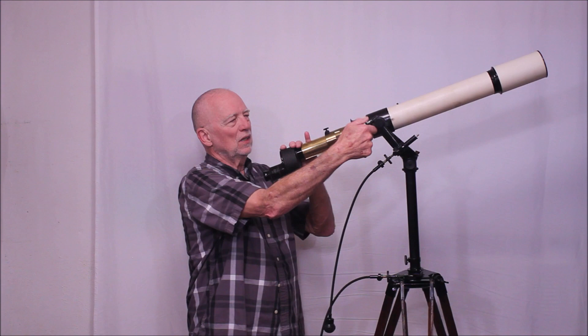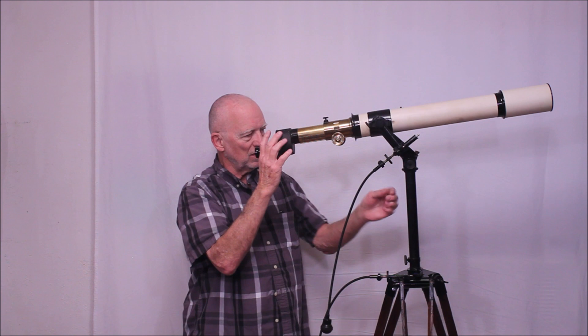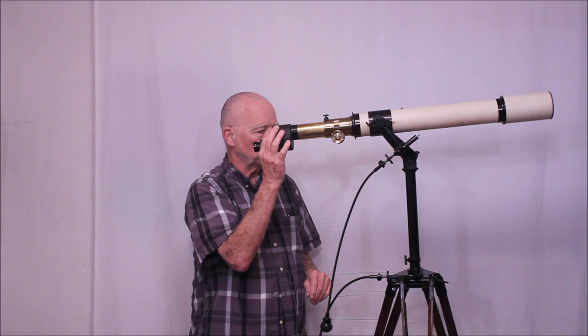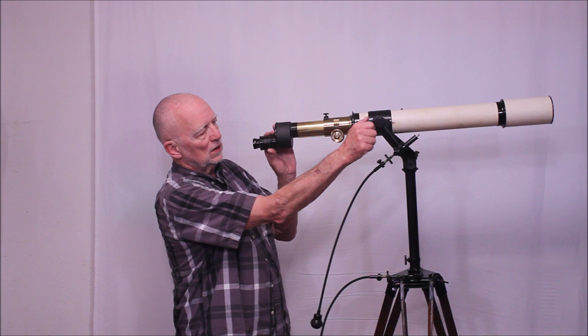This is a lock for altitude. There is a lock for azimuth down here also. Although mostly you probably wouldn't use that or just leave it kind of loose. And then you have your slow motion controls. So let's lock it down here a little bit. Give it some friction both ways.